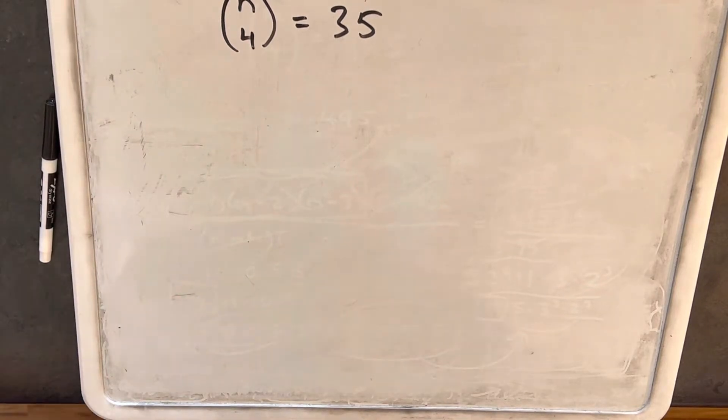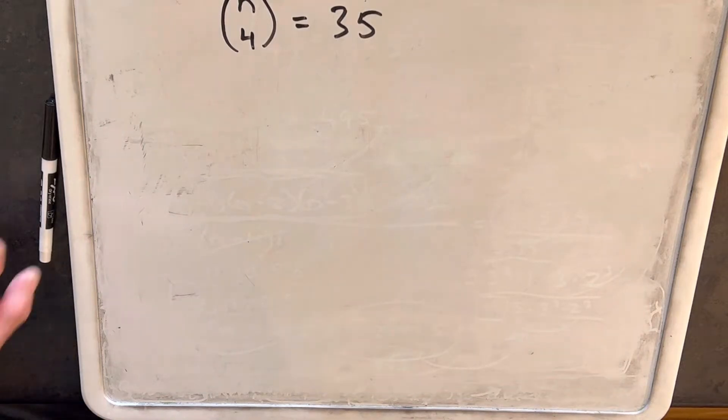Okay, so I have this problem on the board. We have n choose 4 equals 35, and I thought this would be an interesting example.